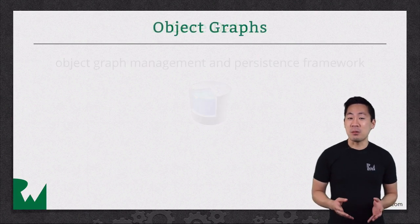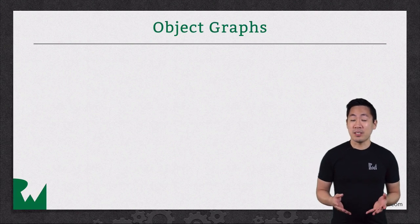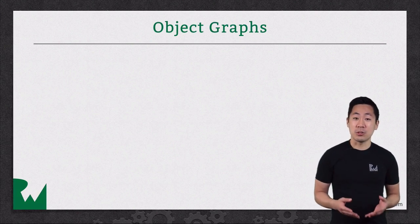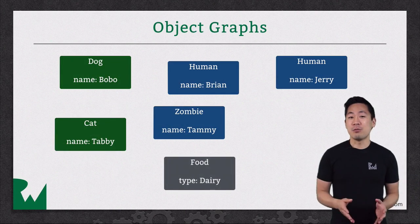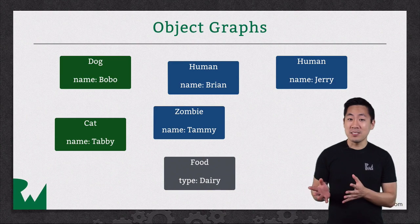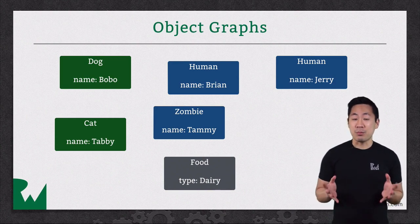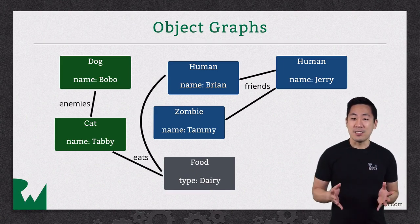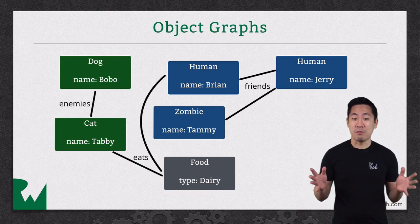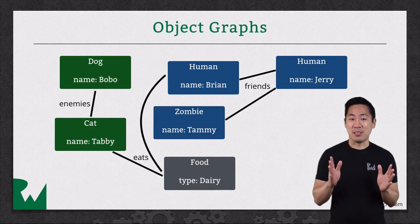Let's start with object graph management. Cocoa is an object-oriented framework, and you're probably already used to storing data in objects. Imagine you've built up an entire set of these objects. You define classes with certain properties, instantiate them, set those properties, and maybe even have properties to relate objects to each other. Then you have this entire object graph built up, and you just want to snapshot it and save it somehow.